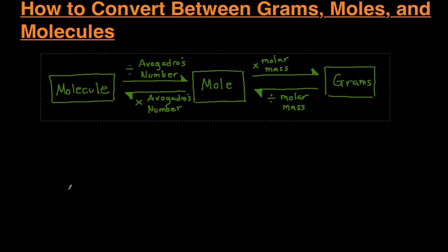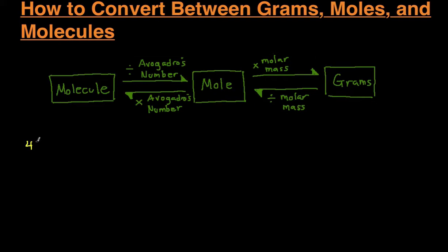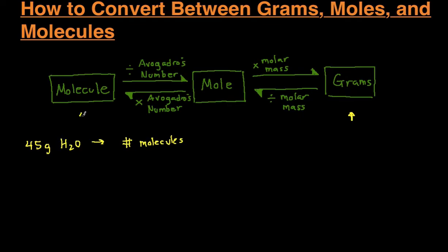So let's start with this example. Let's say we're trying to convert 45 grams of water, and we want to get that into the number of molecules. So let's take a look at where we're starting on the flowchart and where we're trying to go. We're starting at grams and we're trying to get to molecules, so we just follow these arrows right here.